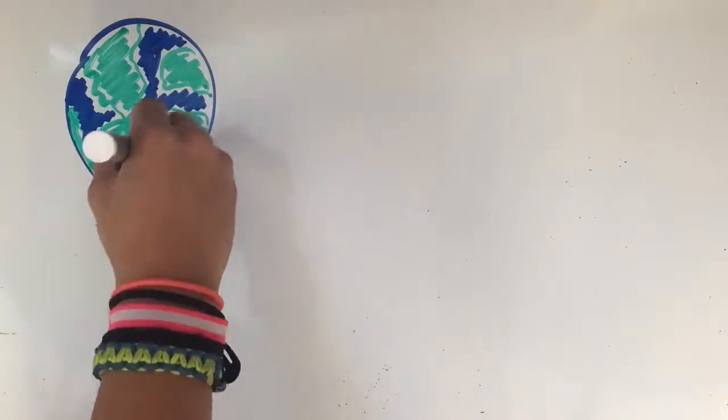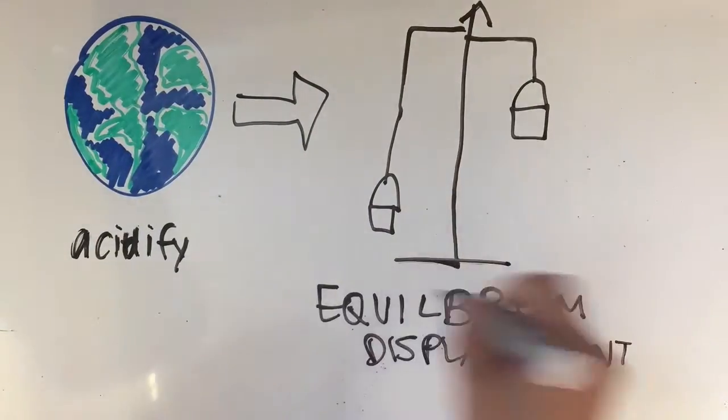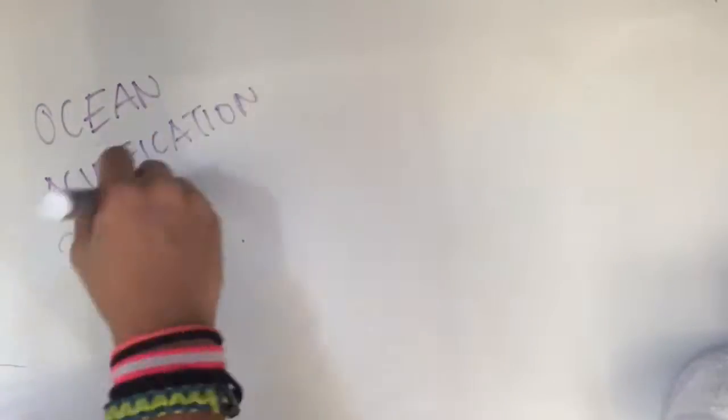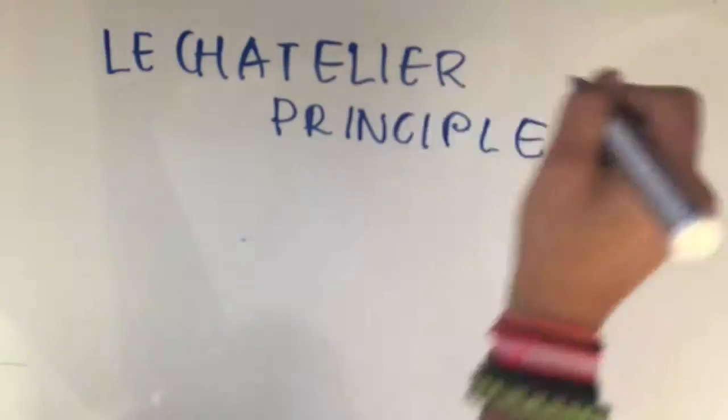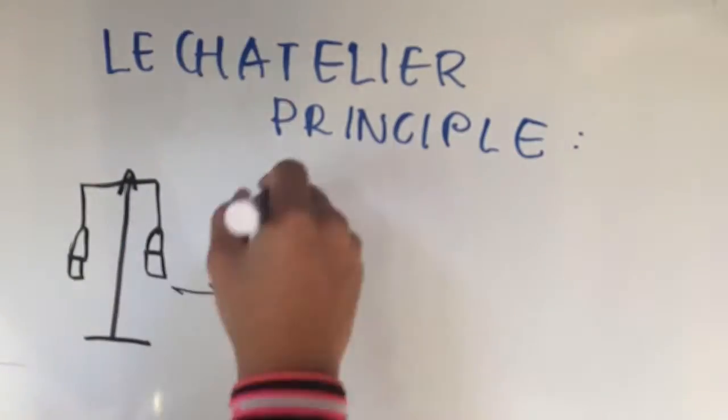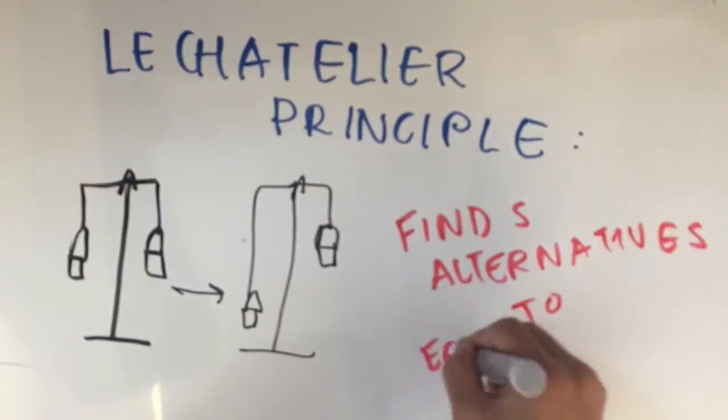When the ocean acidifies, there is an equilibrium displacement because the sides are unequal. When this occurs, something called Le Chatelier's principle applies. Le Chatelier's principle says that when there is a disturbance in an equilibrium, the system will shift to counteract it.